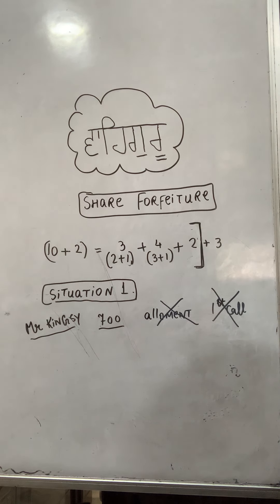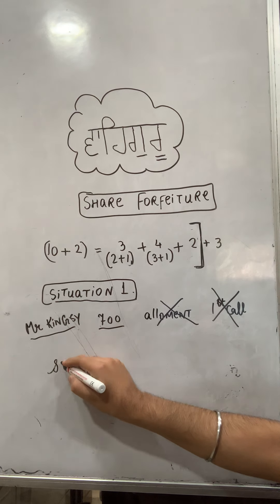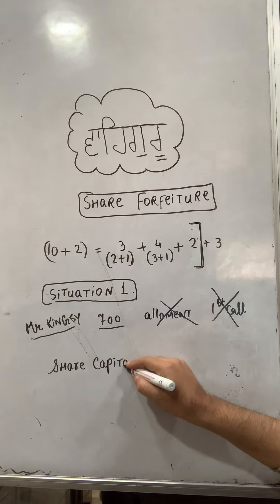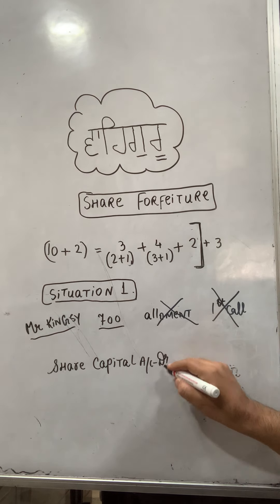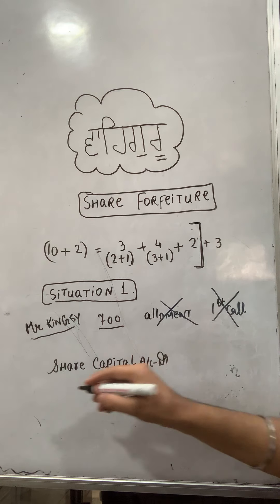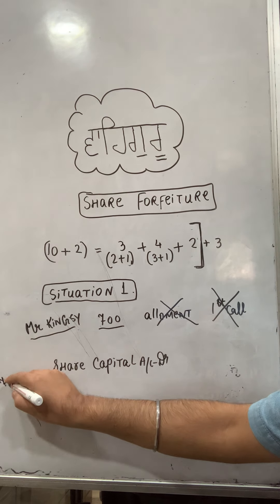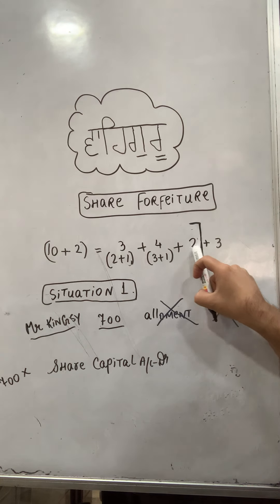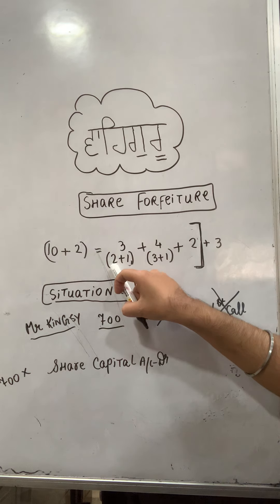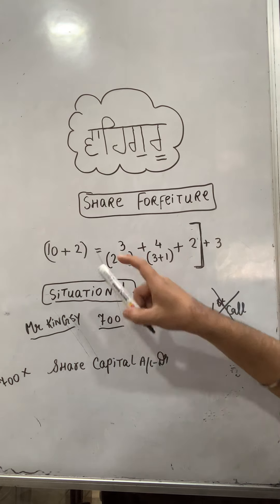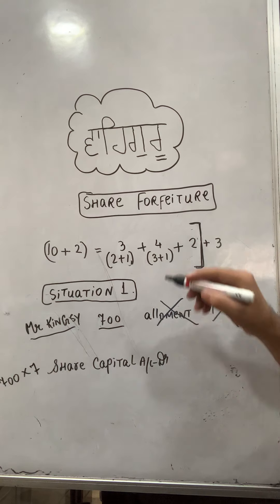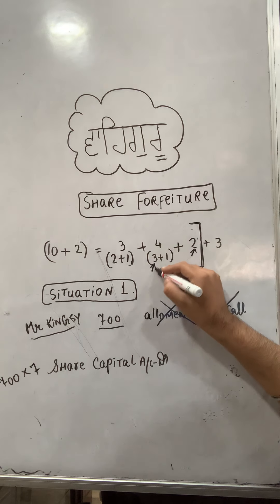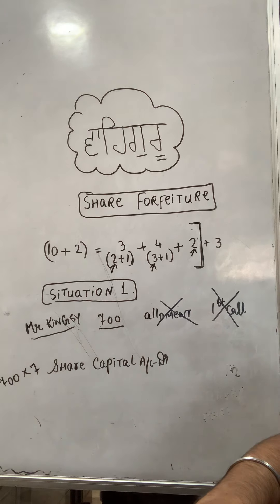Now we put the general journal entry. At the time of forfeiture, share capital is debited. The 700 shares are cancelled at the face value. The components are: application 2, allotment 3, first call 2 — so 2 plus 3 plus 2 equals 7. Therefore, share capital debit is 700 into 7.